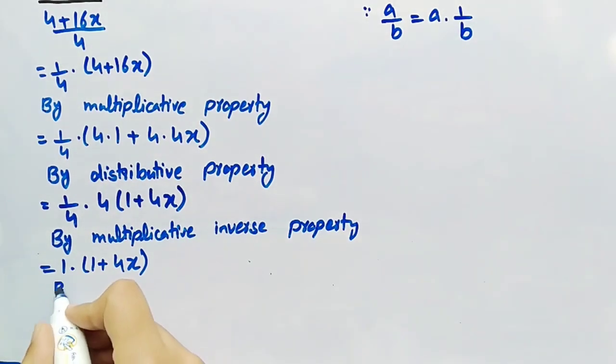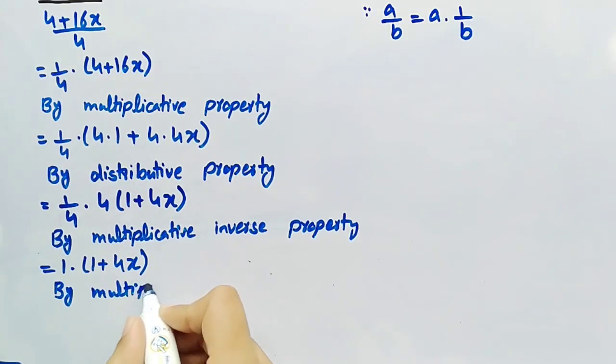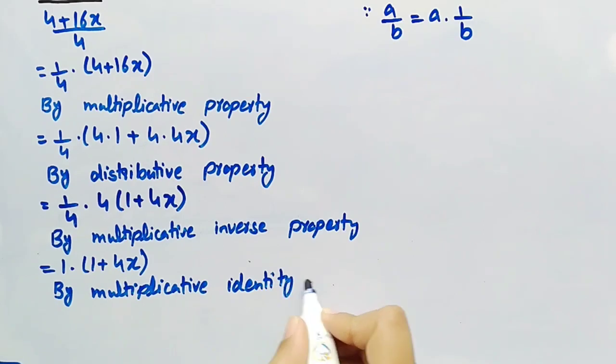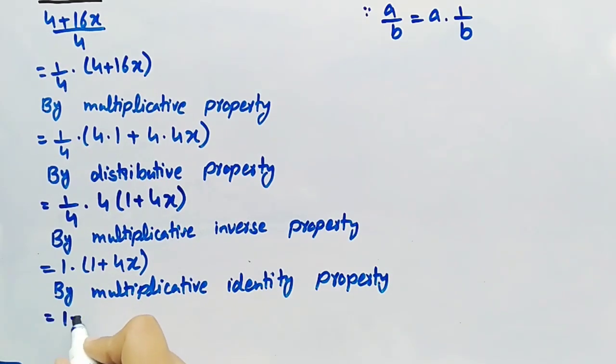So by multiplicative identity property, it can be written as 1 plus 4x, which is the required answer.